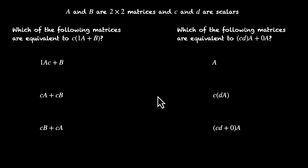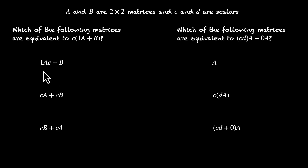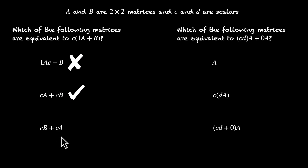So what have we been given? A and B are 2 by 2 matrices and C and D are scalars. The first expression is C times (1A plus B). Now 1 times any matrix will be the same matrix, so this is just A. This becomes C times (A plus B), and we can distribute C: this is CA plus CB. So CA plus CB works. What about 1AC plus B? This is 1 times A, that's A; A times C is AC or CA, plus B. This does not work because C is not multiplied by B. So that one is incorrect. What about CB plus CA? You can add them in any order, so this also works.